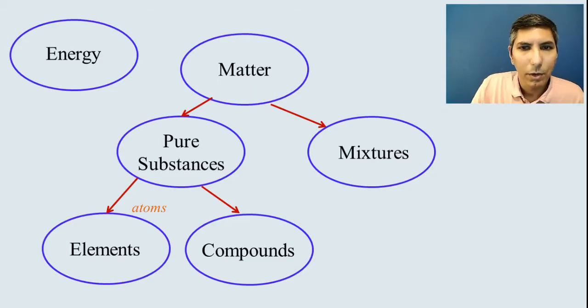For compounds, we know that compounds essentially have multiple elements, two or more elements chemically bonded to each other. Things like water or sodium chloride or sugar, aspirin, these are good examples of compounds.